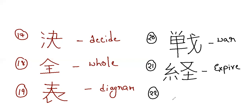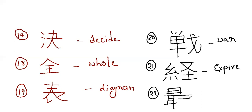Next is the kanji for extreme. It has thirteen strokes: one through thirteen. This is the kanji for extreme, meaning at most.